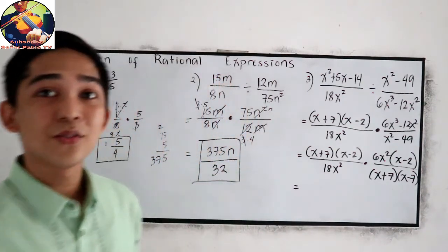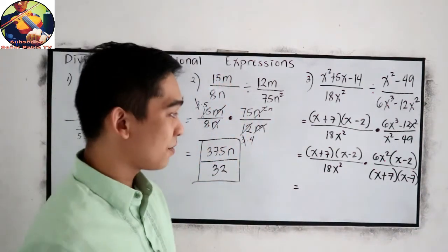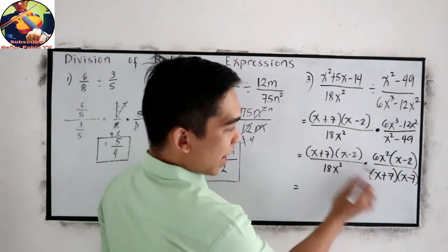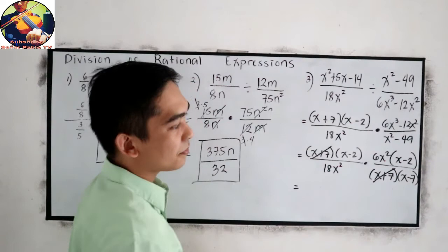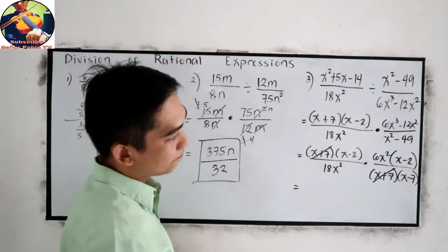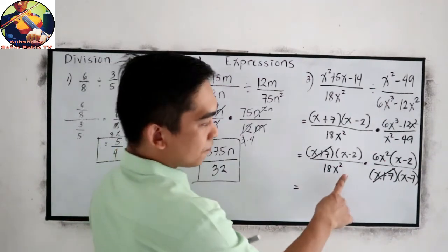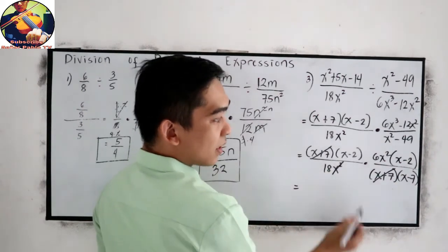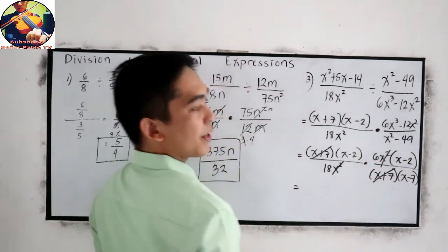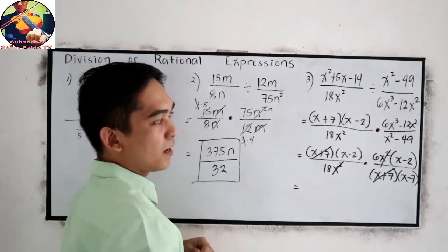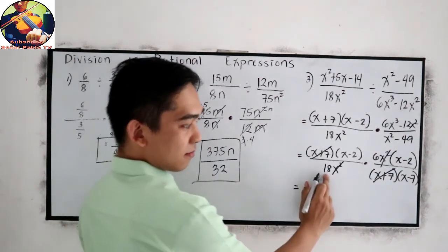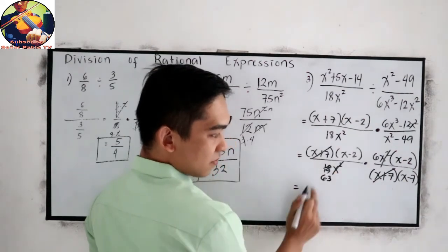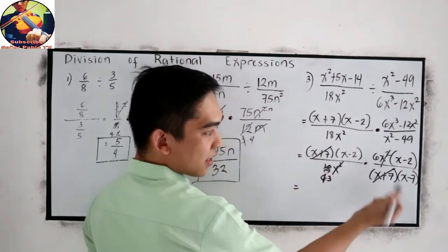Now, let us use our cancellation method. So we have x plus 7, x plus 7. We have x squared. Cancel x squared and x squared. And 18 can be written as 6 times 3. Therefore, cancel 6 and cancel 6.